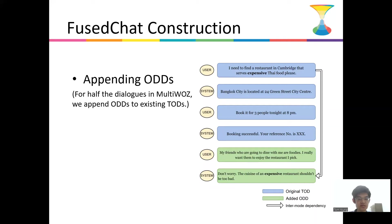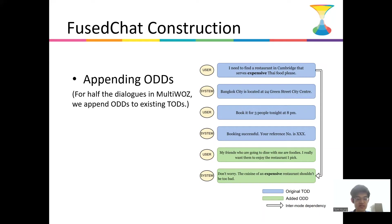In the case of appending ODDs, the ODD follows the TOD. So inter-mode dependency would mean that we want the ODD to be dependent on the TOD. We enforce this by letting the creators write at least one round of exchange whose content reflects concepts or knowledge found in the existing TOD segment.